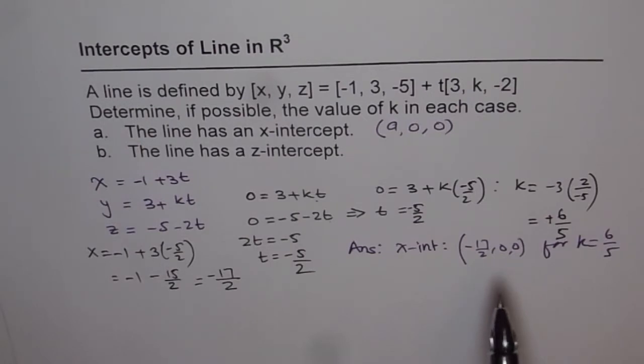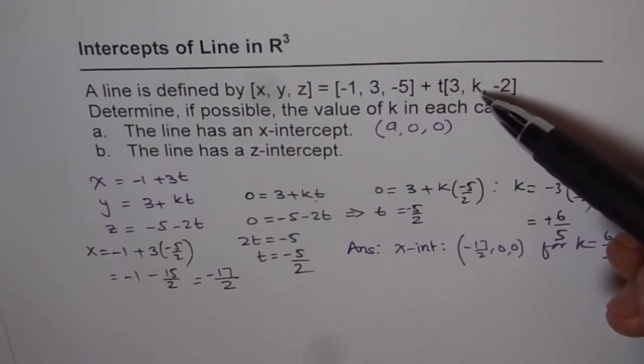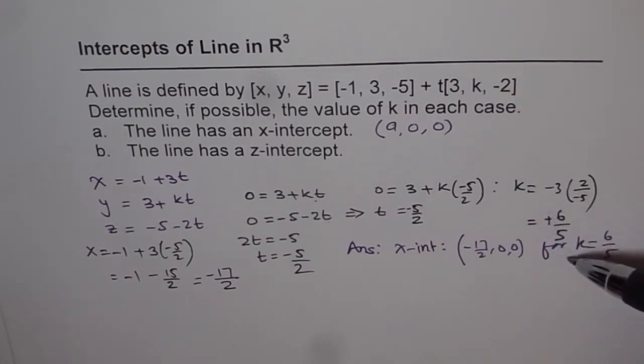I hope you get the process of doing it. So let's follow the same procedure and try to get the z-intercept. But remember one thing. In this example, we do have a variable here. And only that value of k is giving us an x-intercept.